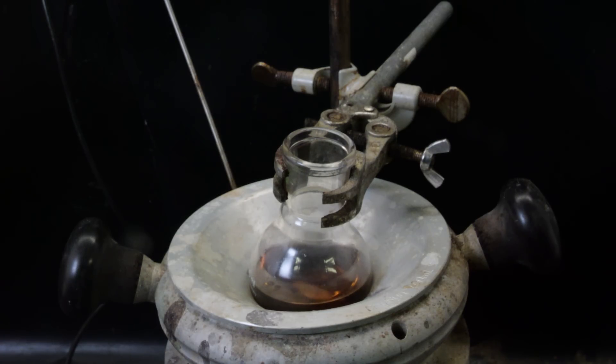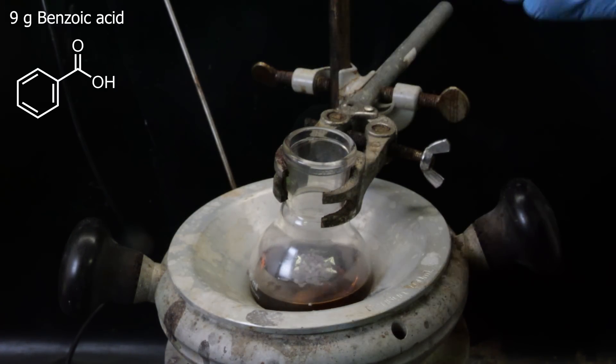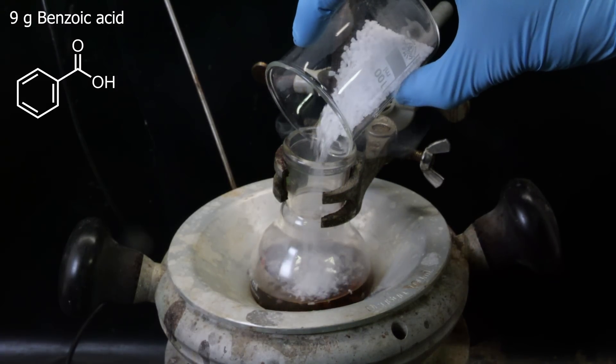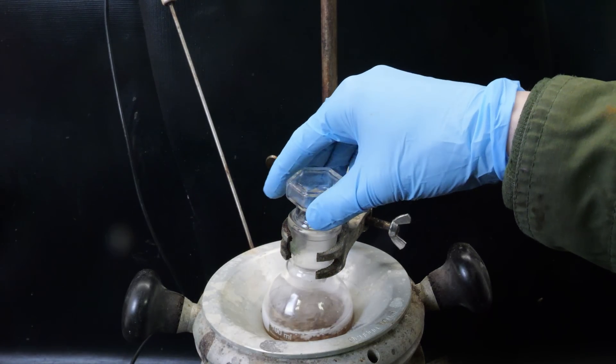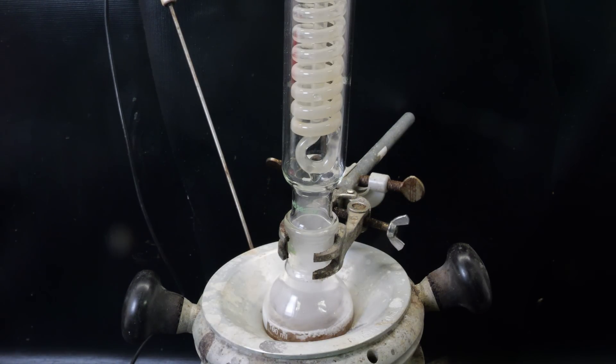So I set the flask in heating mantle, and I add 9 grams of benzoic acid into it. I heat it to 120C and wait for it to dissolve. I added a condenser without water flow and a gas adapter on top to keep out most of the moisture.